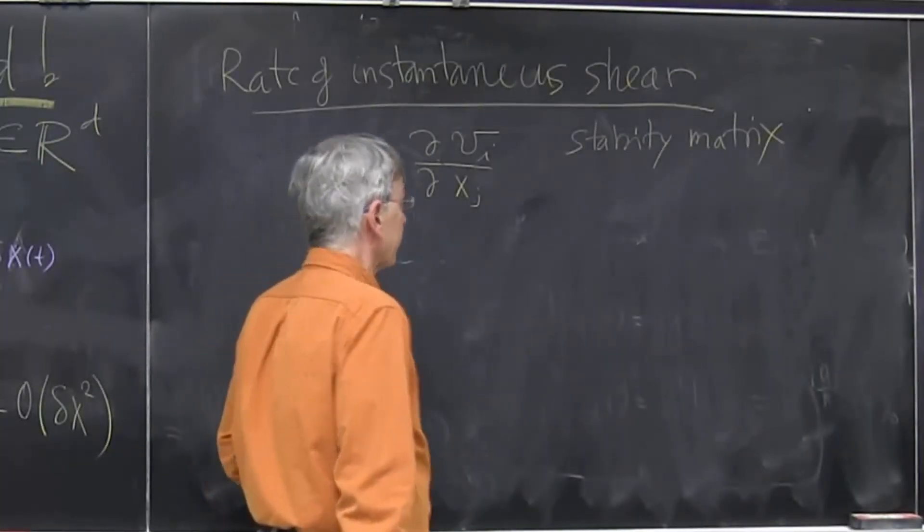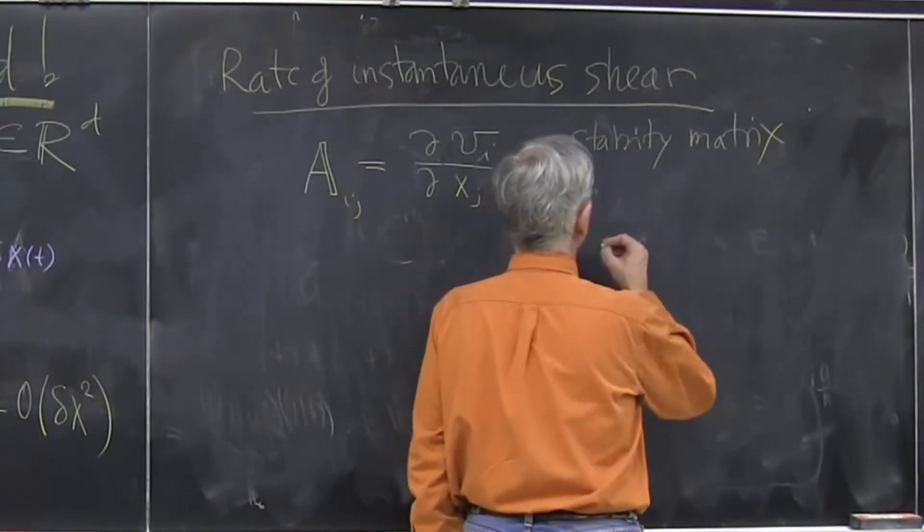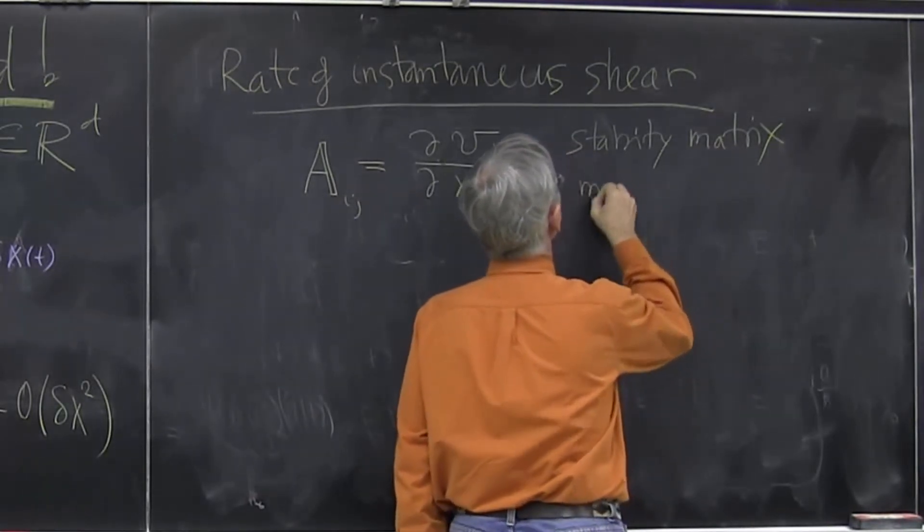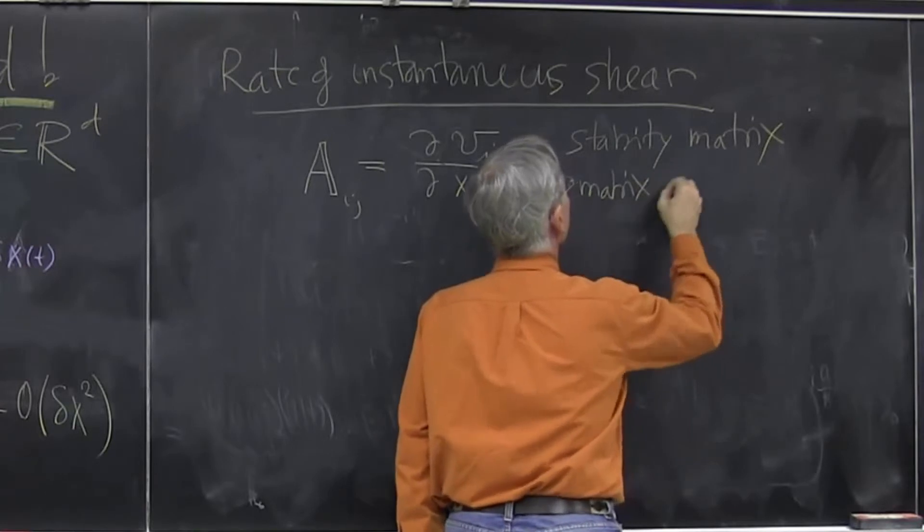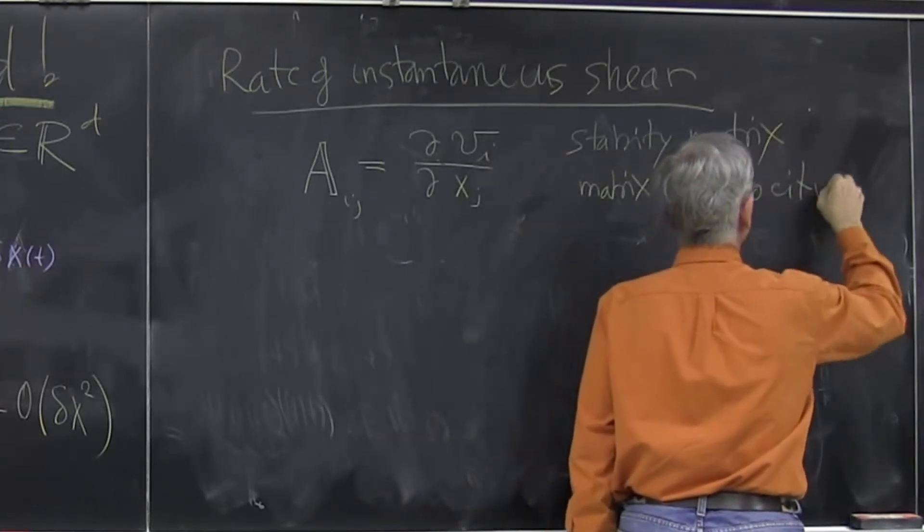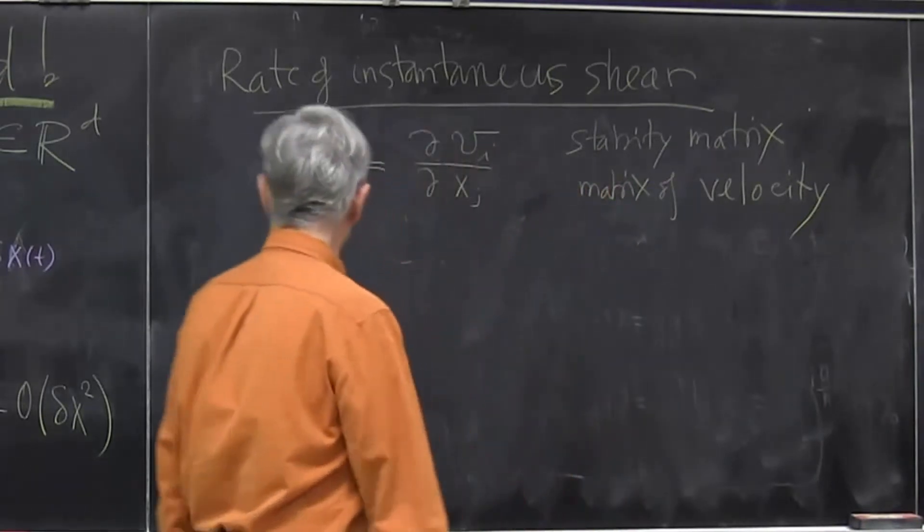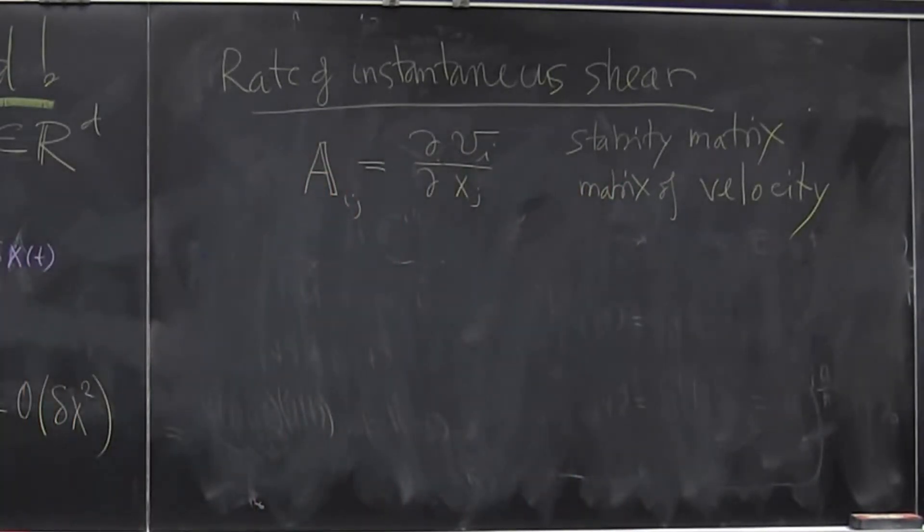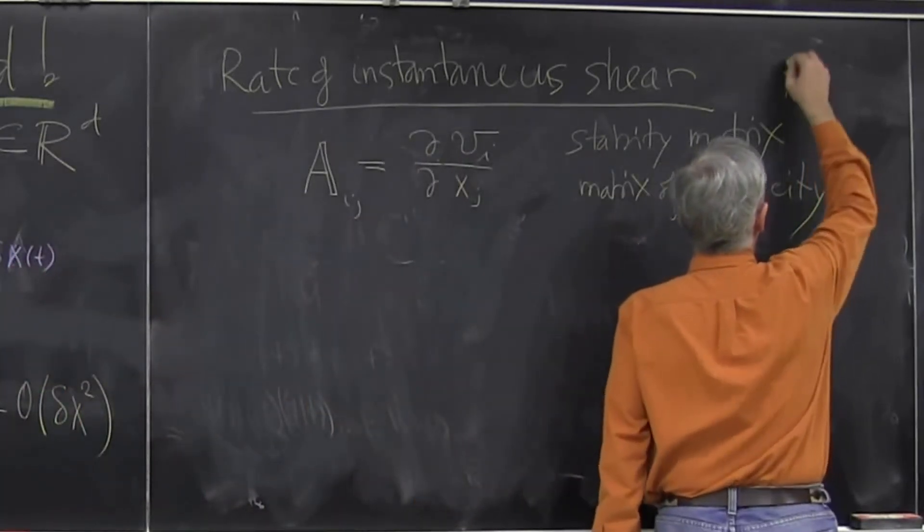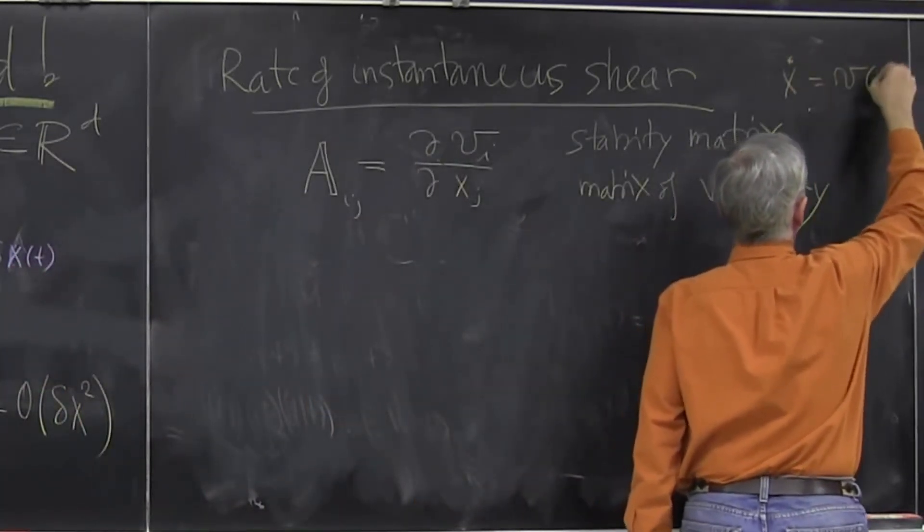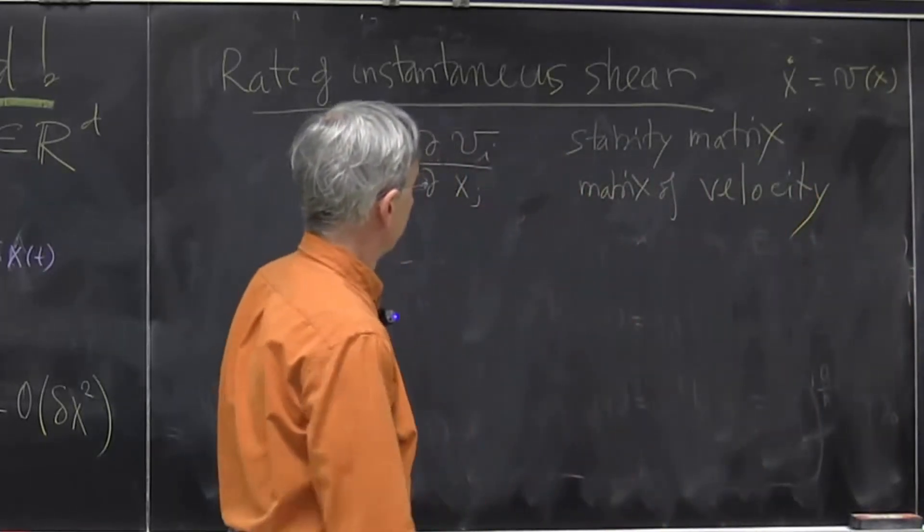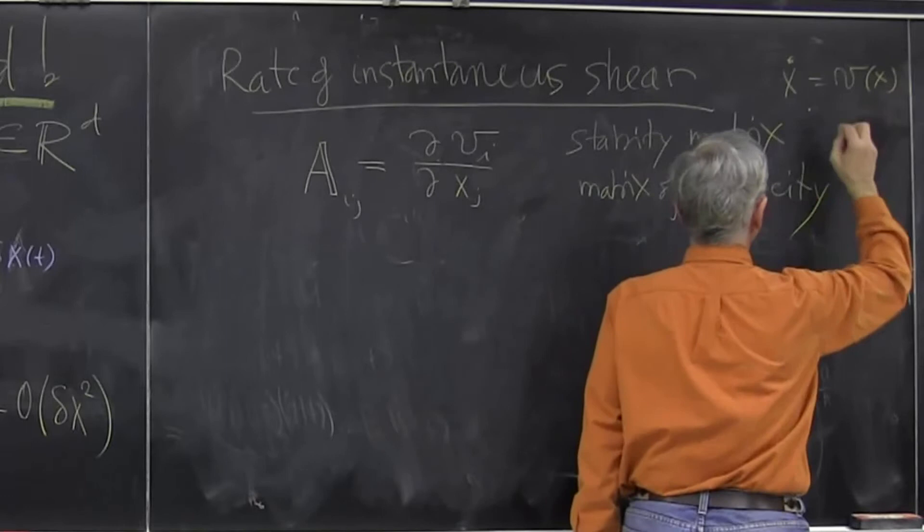So it's called stability matrix. If you want to be really more precise, you can call it matrix of velocity gradients. Remembering this is the generalized velocity. Any dynamical system is converted in a first order dynamical system where XT is V of X and it's autonomous. It just depends very well, but not on the time. So in D dimensions.